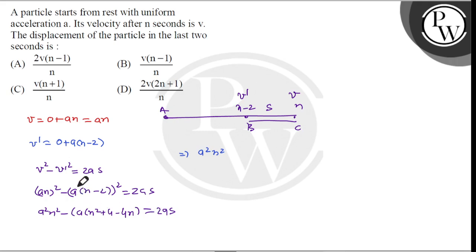When we apply the square here and square here, we get a square n square minus a square n square plus 4 a square minus 4 a square n equals 2as. Therefore, 2as equals 4 a square n minus 4 a square.